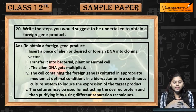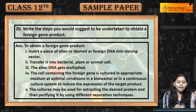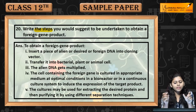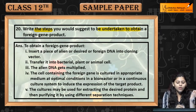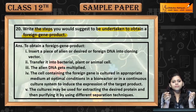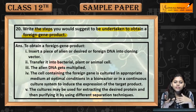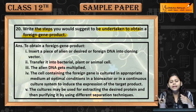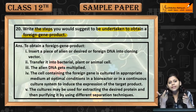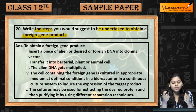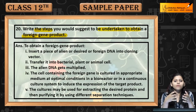Question 20: Write the steps you would suggest to be undertaken to obtain a foreign gene product. If you need a desired character, how can we get a foreign gene product?